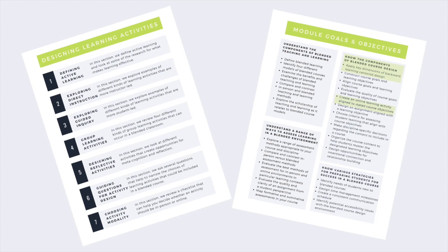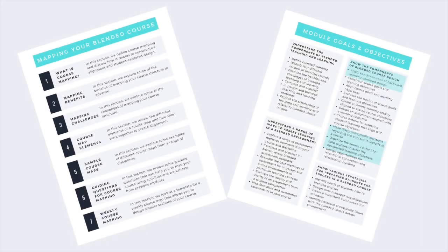Those activities are student-centered, engaging, and aligned with one another to ensure strong connections across an overall blended course structure. Once we have the course's foundational aspirations in place, in Module 5, we map all of the elements of the blended course in a comprehensive way to ensure alignment and a diversity of teaching and learning methods across the term.